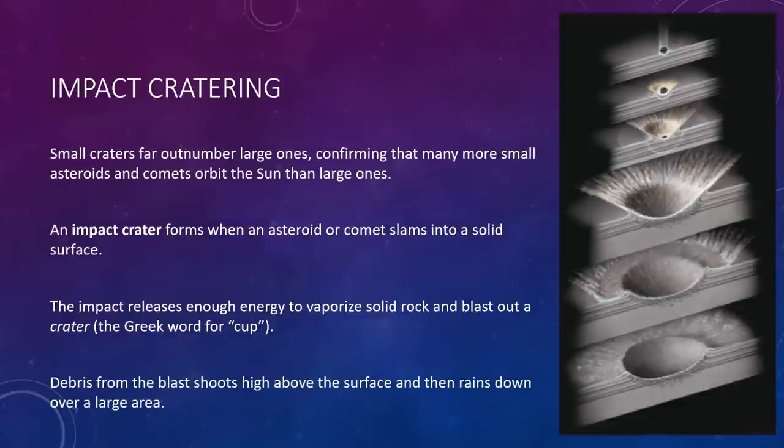An impact crater forms when an asteroid or comet slams into a solid surface. Impacting objects typically hit the surface at a speed between about 10,000 and 70,000 meters per second. At such tremendous speeds, the impact releases enough energy to vaporize solid rock and blast out a crater, which is a Greek word for cup. Debris from the blast shoots high above the surface and then rains down over a large area. If the impact is large enough, some of the ejected material can escape into space. You can see a little graphical representation of this here. We have an impactor coming in and you can see the resulting cratering.